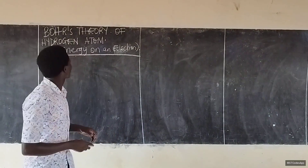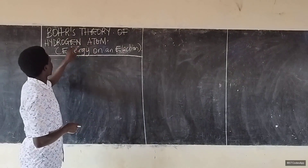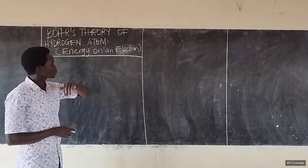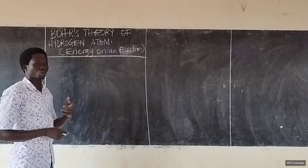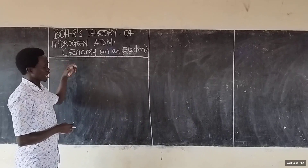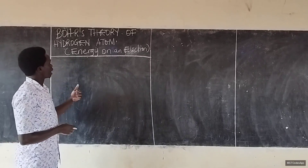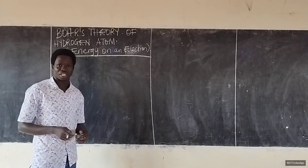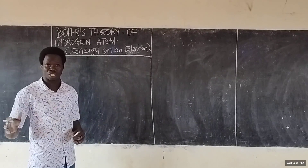Today I want us to look at Bohr's theory of the atom, and we are basically going to look at how we can derive the energy and orbital radius according to Bohr's postulates.